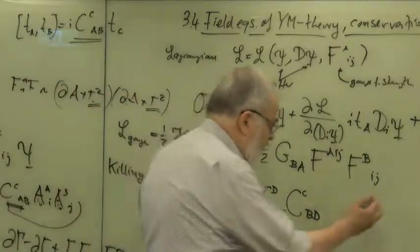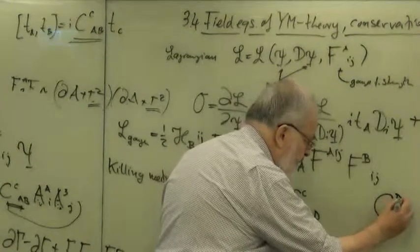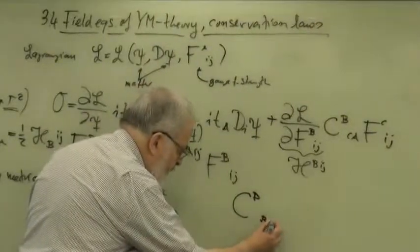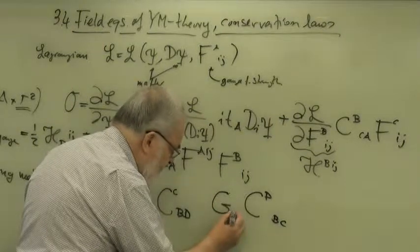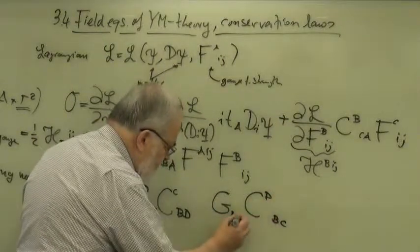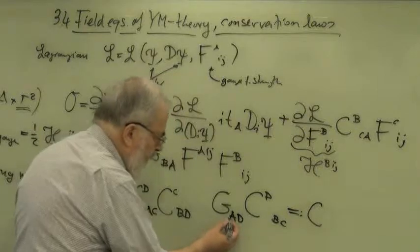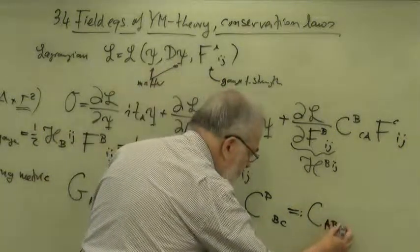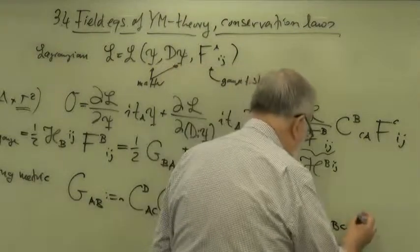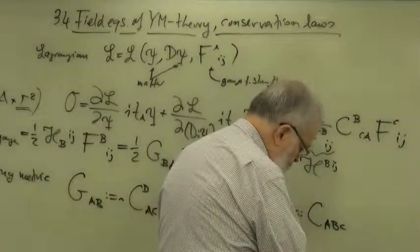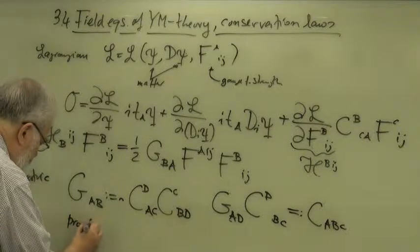And if you have the Killing matrix, you can now—if you have the structure constants cabc—and you can lower one of those indices: gad times cabc, and this is the d. And this you call by definition cabc. Now you have all indices down in the Killing and in the structure constant, and you can move easily.